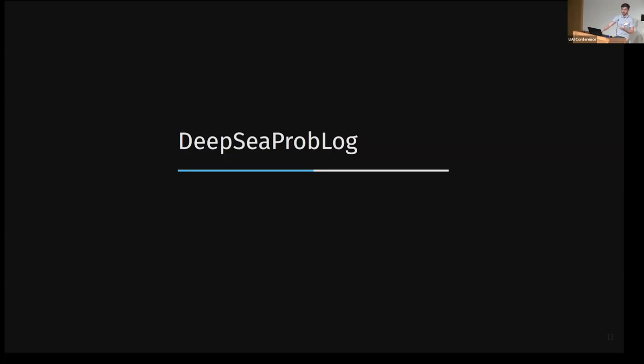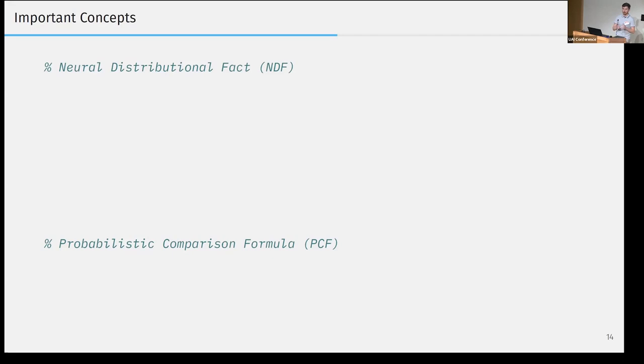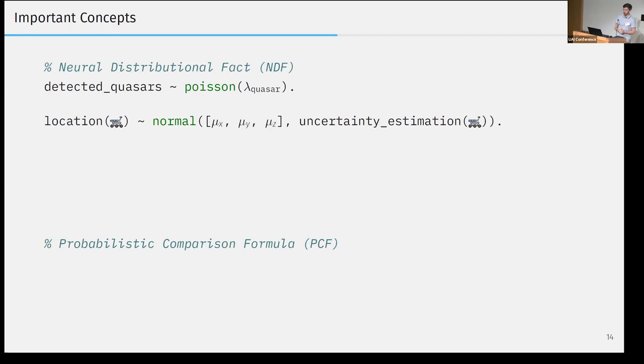Now we can actually go to introducing DeepSea ProbLog, which is built upon two unifying concepts, the neural distributional facts, or NDF, and the probabilistic comparison formula, or PCF. An NDF is used to define random variables as we did before, but now also continuous ones. So in the first line, we define that the number of detected quasars follows a Poisson distribution, where the rate is given by some possibly optimizable parameter. In the second line, we show that we also support multivariate distributions by modeling the location of, let's say, a robot, again by giving it a certain mean value or mean vector, and where the uncertainty, the covariance matrix is in this case estimated by, again, a neural network. It is also at this point that we apply deep probabilistic programming as it excels in modeling these kinds of distributions and allowing them to be optimizable.